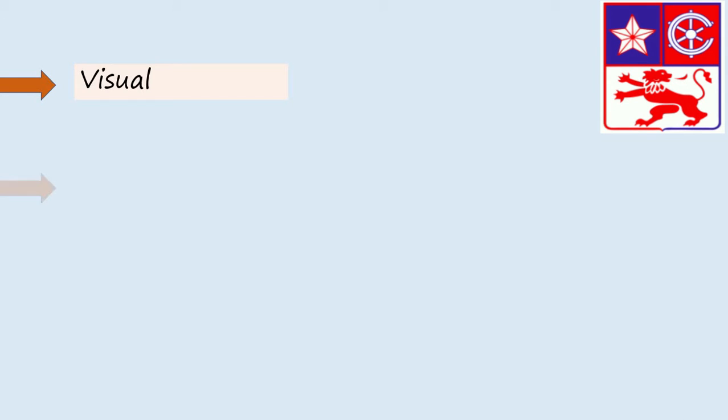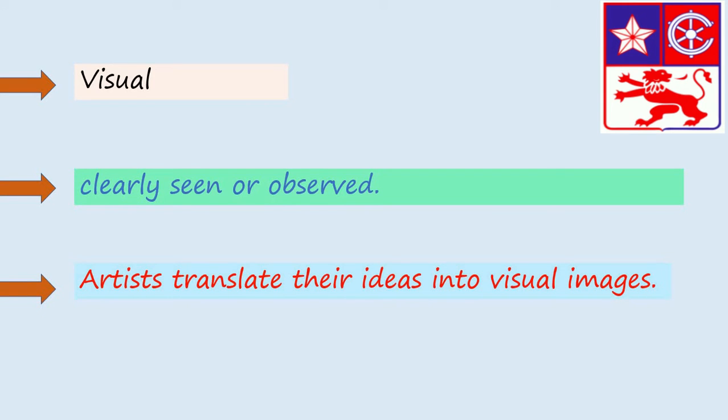Visual. Clearly seen or observed. For example, artists translate their ideas into visual images.